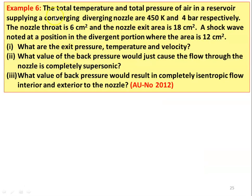Example number 6: The total temperature and total pressure of air in a reservoir supplying a converging-diverging nozzle are 450 Kelvin and 4 bar respectively. The nozzle throat area is 6 cm² and nozzle exit area is 18 cm². A shock wave is noted at a position in the diverging portion where the area is 12 cm². What are the exit pressure, temperature, and velocity?